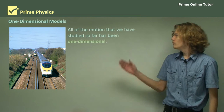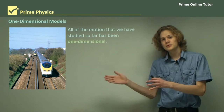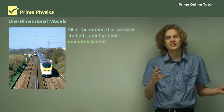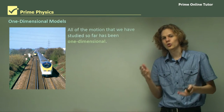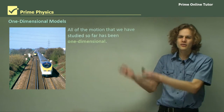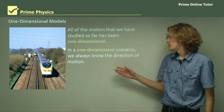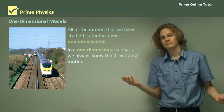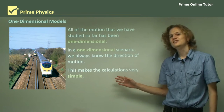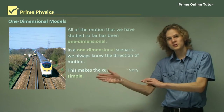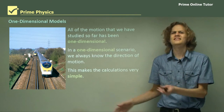All of the motion that we have studied so far has been one dimensional. So all displacements, velocities and accelerations have been in one direction or the opposite direction, with no other component to any of the motions. In a one-dimensional scenario we always know the direction of motion, which makes the calculations very simple — either something's positive or it's negative, with no need to worry about other directions and axes.